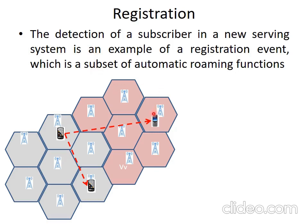There are two functions which allow the subscriber to register with the network: the first one is entity location, and the other is the status of the mobile station. As a conclusion, mobile registration must be performed before the network can provide the service.